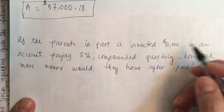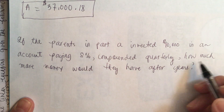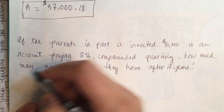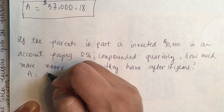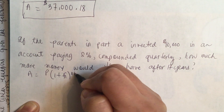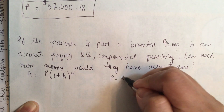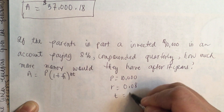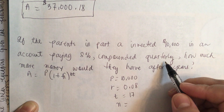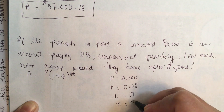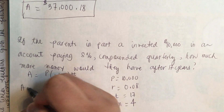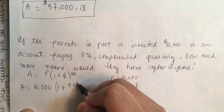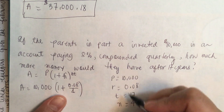If the parents in Part A invested ten thousand dollars in an account paying eight percent compounded quarterly, how much more money would they have after 17 years? We use the same equation: A equals P times one plus r over n to the NT power. P is the same — ten thousand. R is the same — 0.08. T is the same — 17 years. And N is quarterly, meaning four times a year.